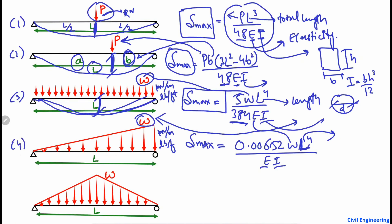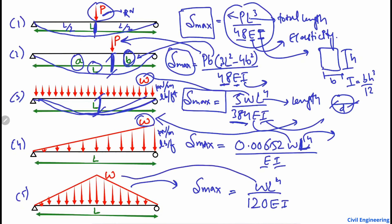The last case is another uniformly varying load configuration, for which the maximum deflection equals WL⁴ divided by 120EI. W is the uniformly varying load in kilonewtons per meter, L is the total beam length, 120 is a constant, E is the modulus of elasticity, and I is the moment of inertia. Substituting all values gives the maximum deflection, which again occurs at mid-span.